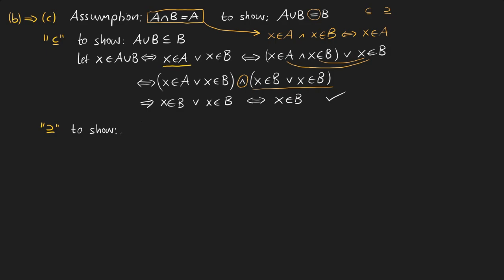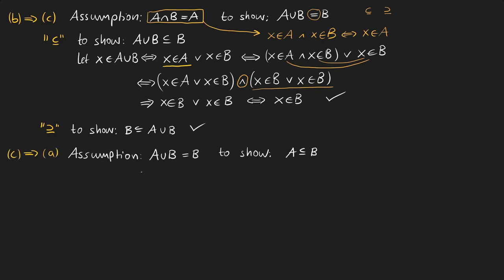For the next step we need to show that B is a subset of the union of A and B, and we don't really have to prove it because this statement is always true. Lastly we also need to show that C implies A, which means that if the union of A and B equals B, then A is also a subset of B. So we take a random element from A and show that it is also in B.